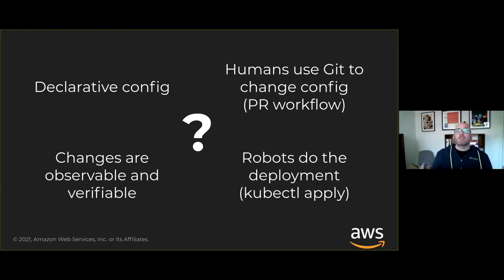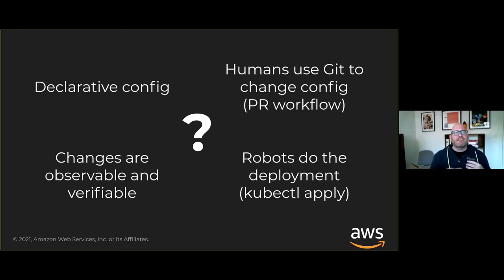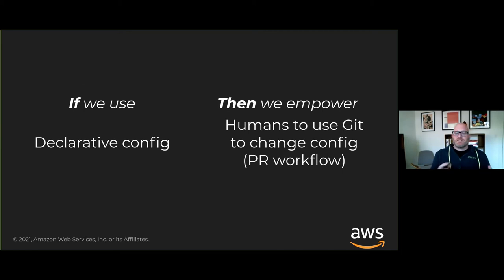Maybe you've gone online and asked what exactly is GitOps, and you've seen these four things on your screen right now as GitOps best practices: declarative configuration management; humans using Git and Git-based workflows to change the configuration of an application; making sure that all changes are observable and verifiable; and making sure that robots are doing the deployment and not humans. These four best practices kind of make sense, but for me it didn't really click until I related the first two to each other by saying: if we use declarative configuration, then we empower humans to use Git-based workflows to change the configuration of an application.